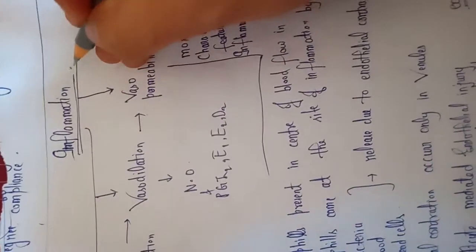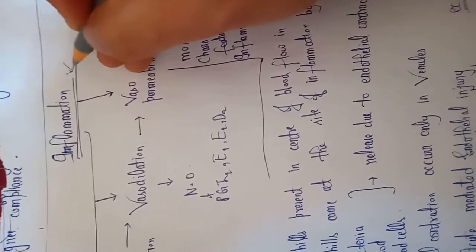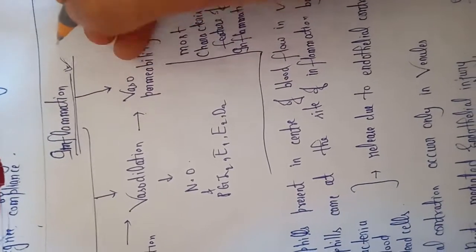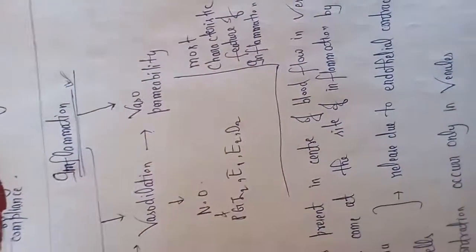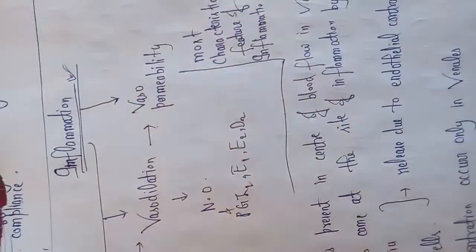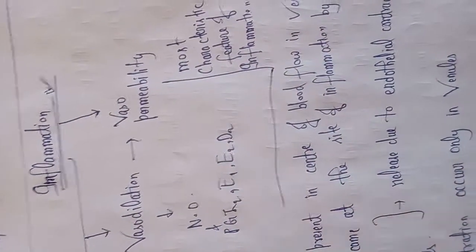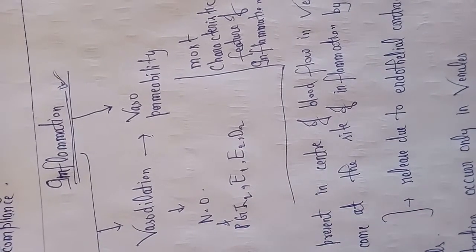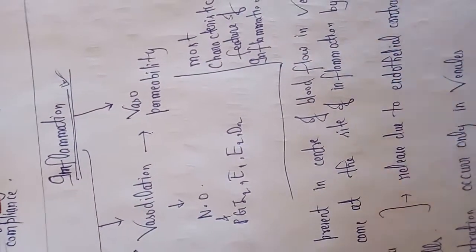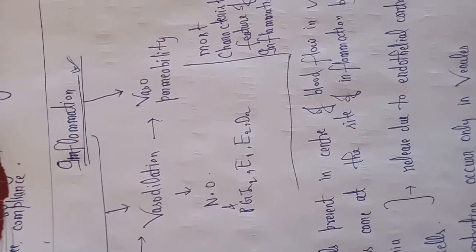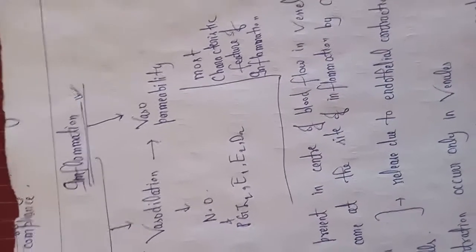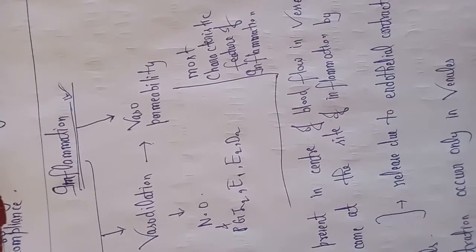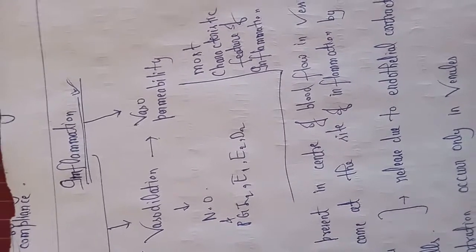Welcome to the new topic: inflammation. What is inflammation? Inflammation is the physical response of the body — the primary response against any disease-causing pathogen, microbe, or toxic chemical. There are mainly four symptoms in acute inflammation: redness, swelling, heat, and pain.